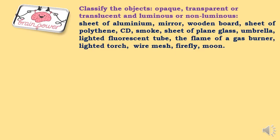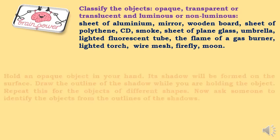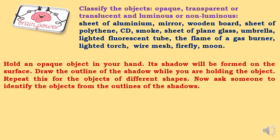Use your brain power. First question. Classify the objects based on whether they are opaque, transparent, translucent or luminous, non-luminous. Here are different names of objects. You can pause the video and you can write down in your notebook. Then, one activity. Hold an opaque object in your hand. Its shadow will be formed on the surface. For that, you may have to hold this object just below the light or you can do this experiment in dark room where you can use torch also. Draw the outline of the shadow while you are holding the object. You may take someone's help if you need. Repeat this for the objects of different shapes. Now, ask someone to identify the objects from the outlines of the shadows.